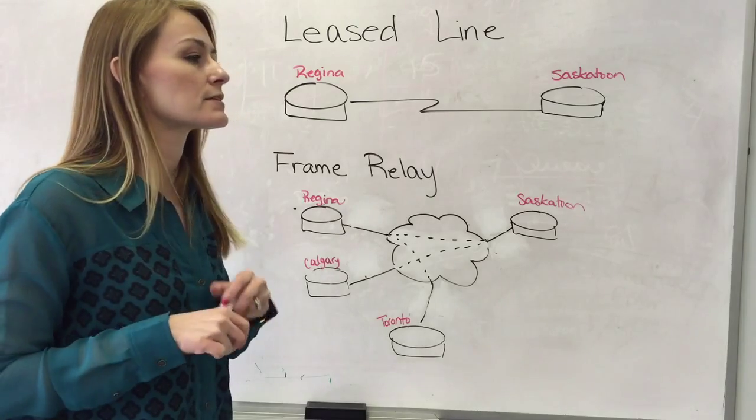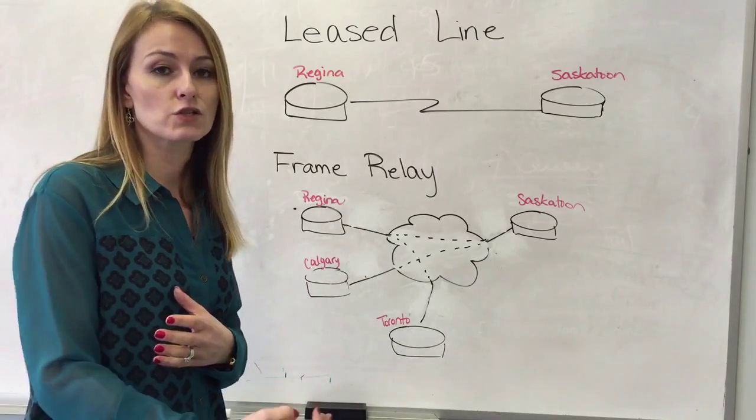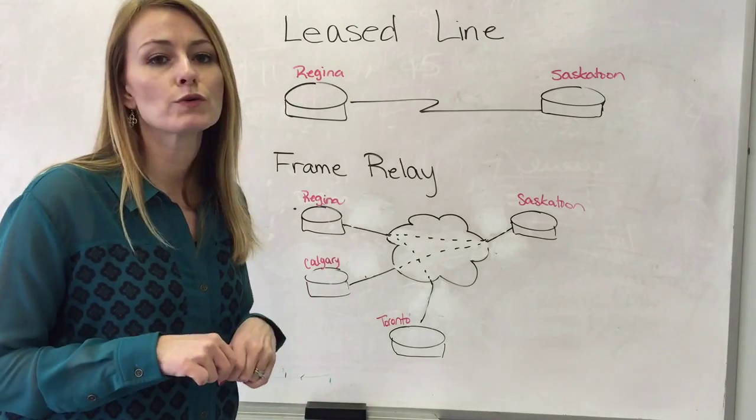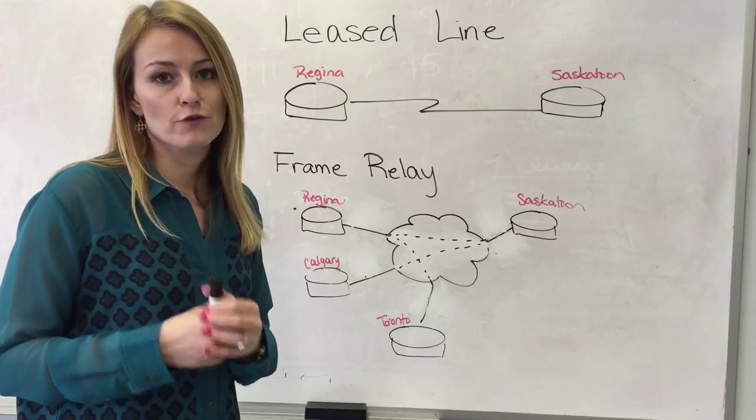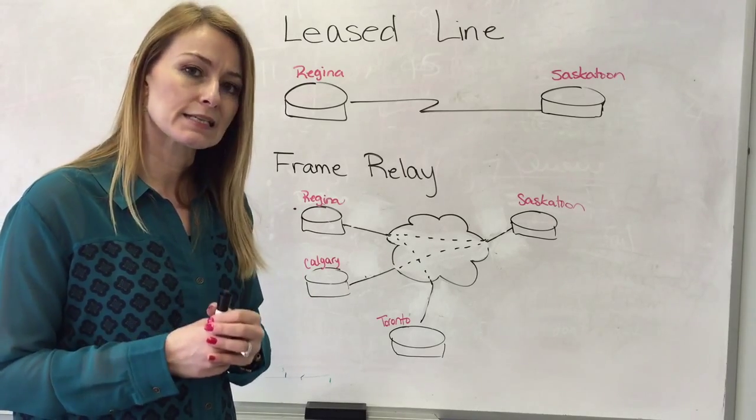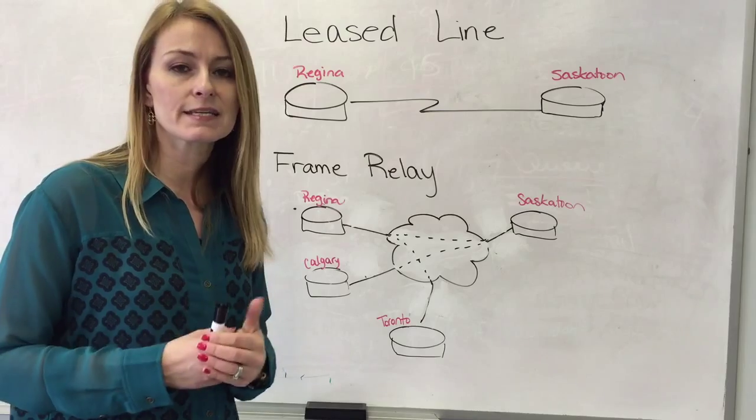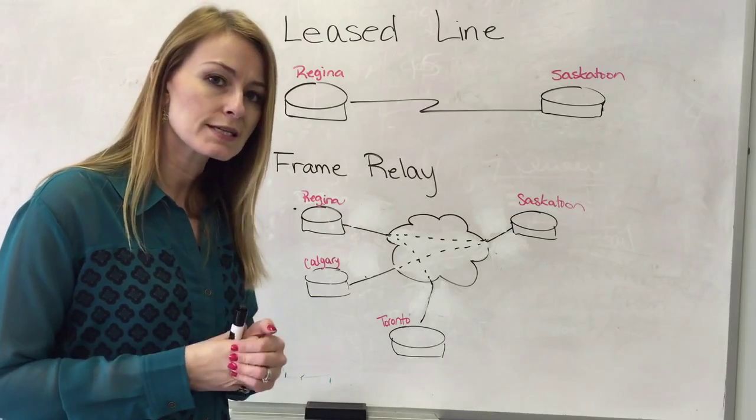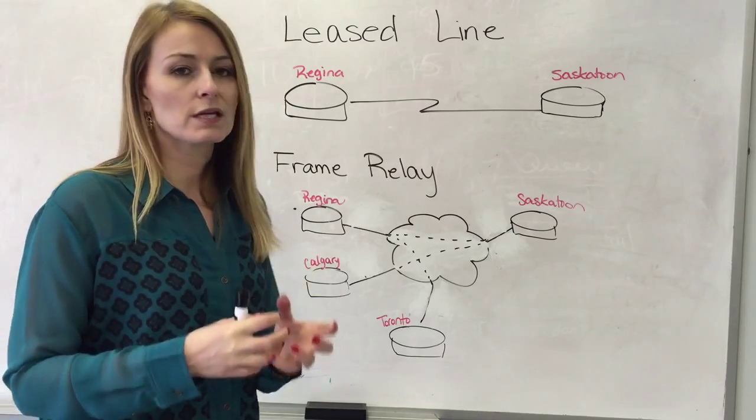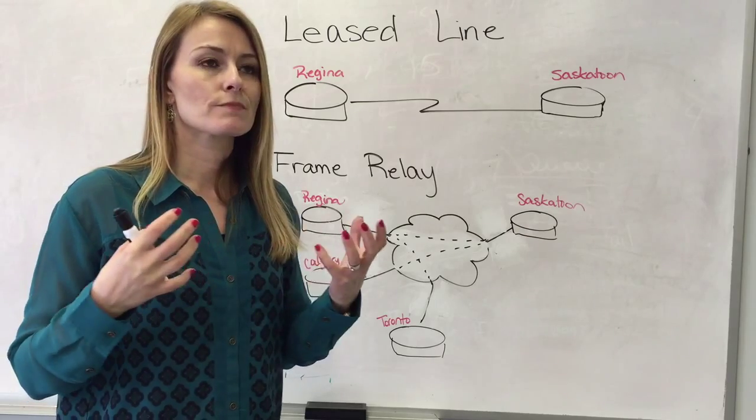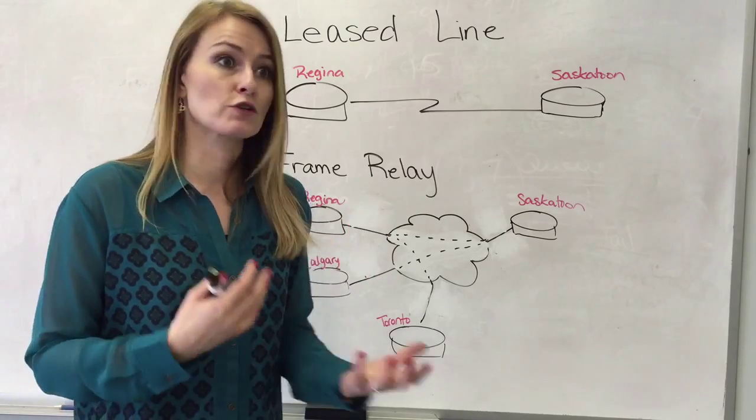The way that data gets from one point to another is through a numbering system for the virtual circuits. They're called DLCIs and a DLCI is a number that is locally significant to each endpoint, each virtual circuit.